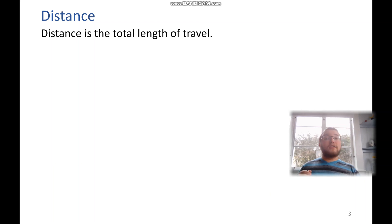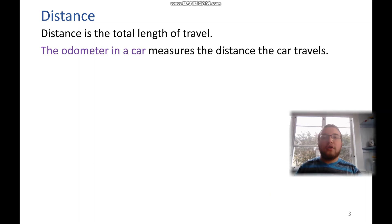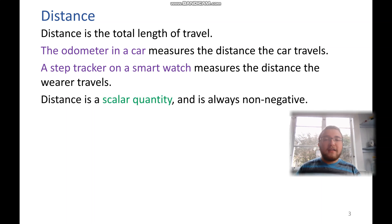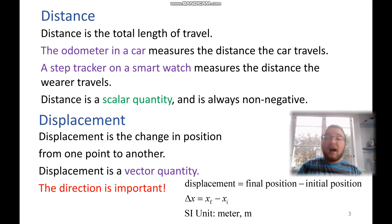Distance is the total length that you've traveled. Things like the odometer in a car or a step tracker on your watch measure the total distance traveled. Now this means that distance is a scalar quantity. It is never negative. It's either zero or positive.